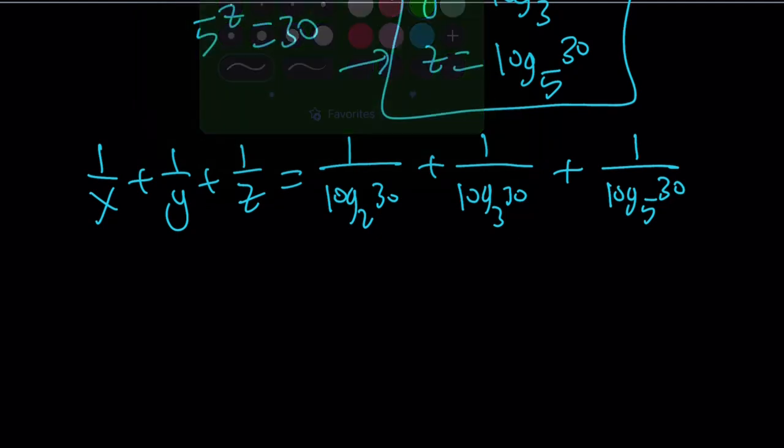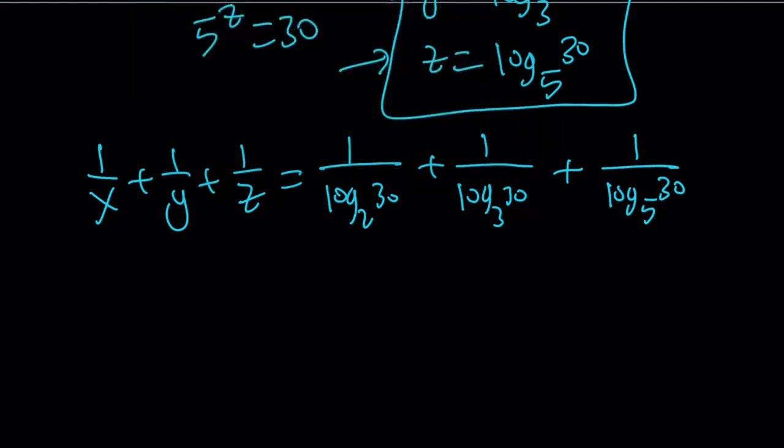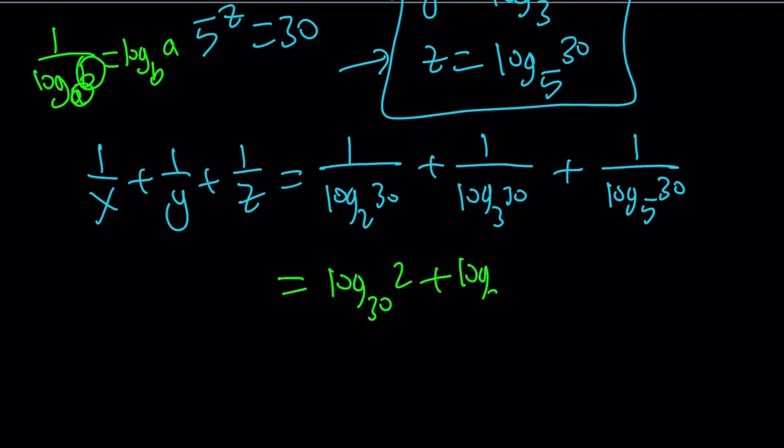Okay, so what am I going to do here? I'm going to use the property. What is it called? The reciprocal property. So if you have 1 over log b base a, it can be written as log a base b. Make sense? They just switch around. Cool. Easy right? So this becomes log 2, log 3, and log 5. All base 30.